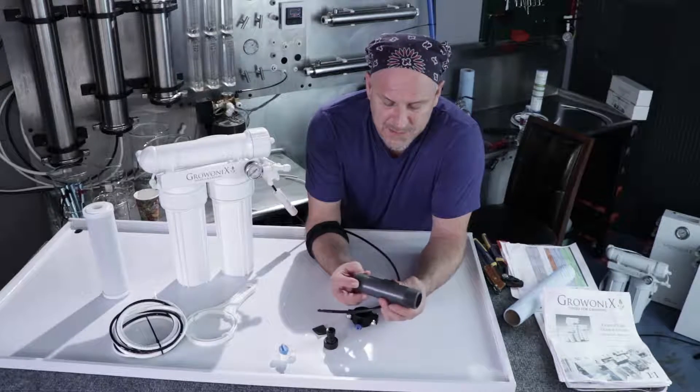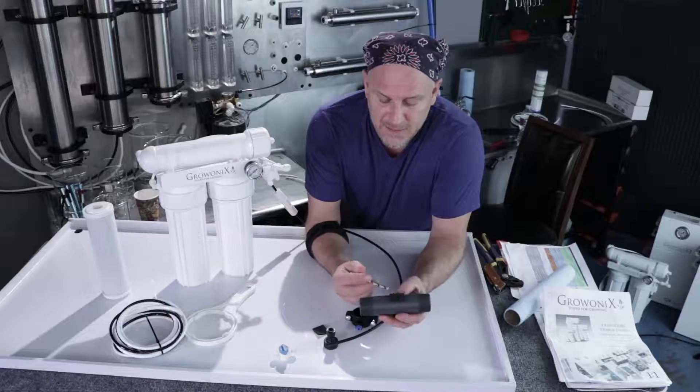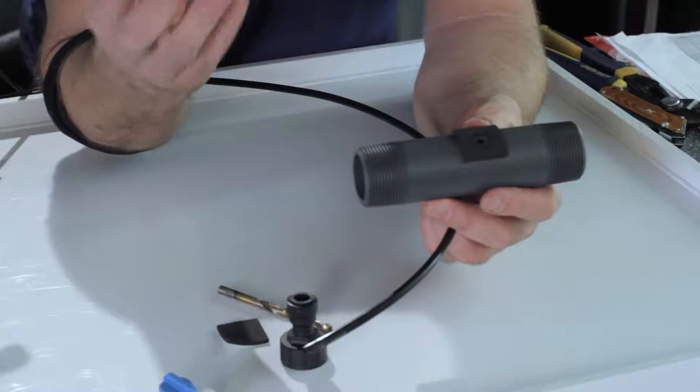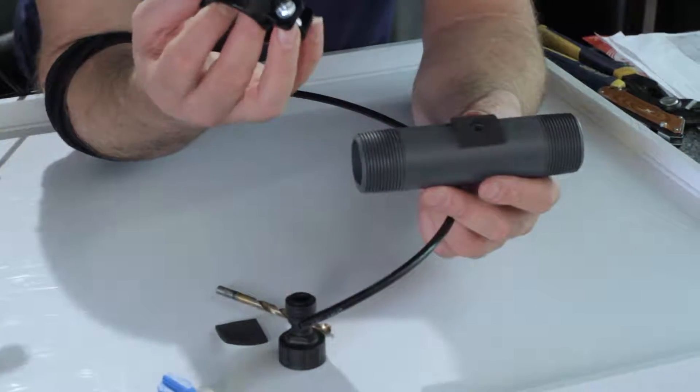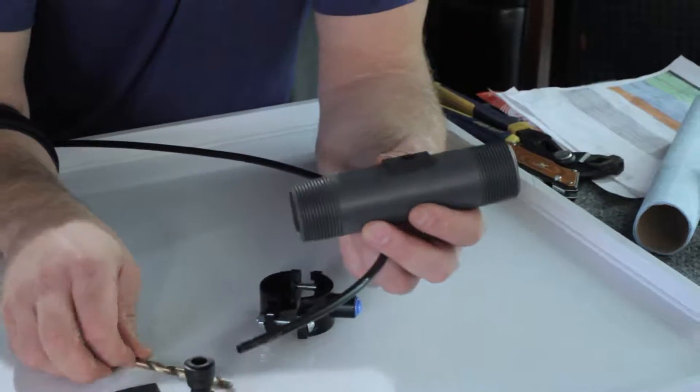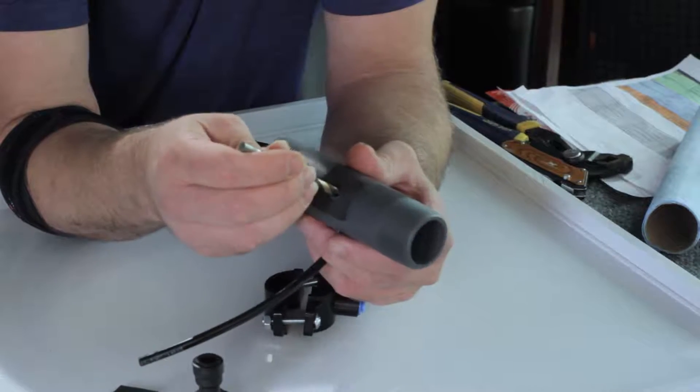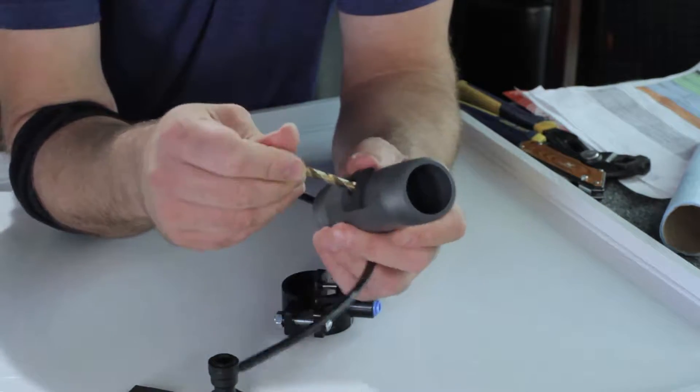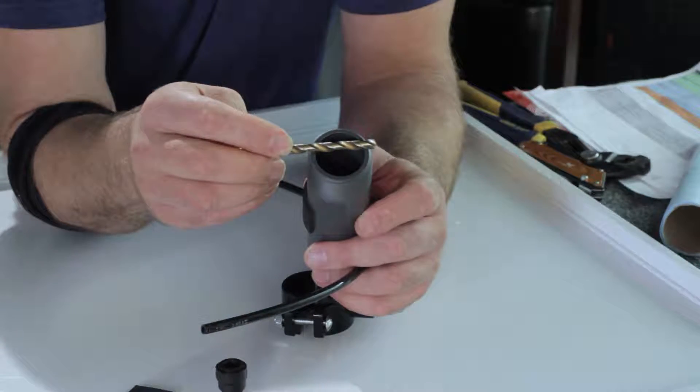We're going to pretend this is a pipe underneath a sink, above the trap generally. These things are sized for an inch and a quarter. Of course, they fit an inch and a half as well. All we're going to do is drill a quarter inch hole into the side of the pipe. Don't go all the way through and drill through the pipe. That would be a mistake.